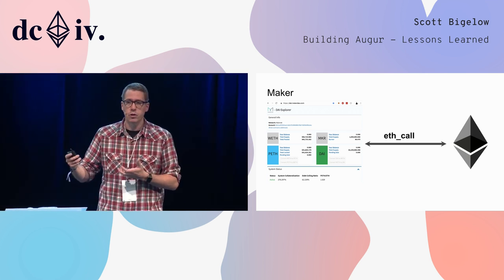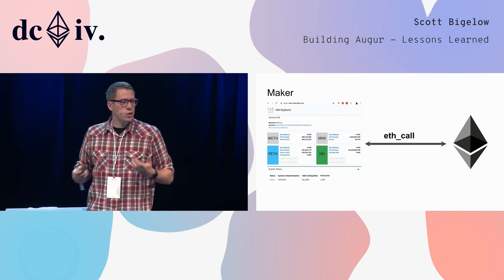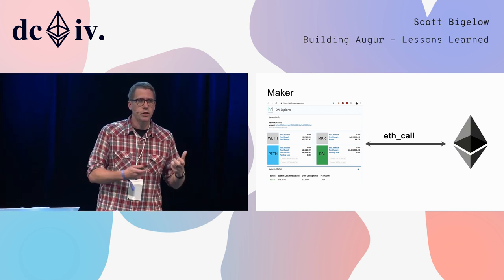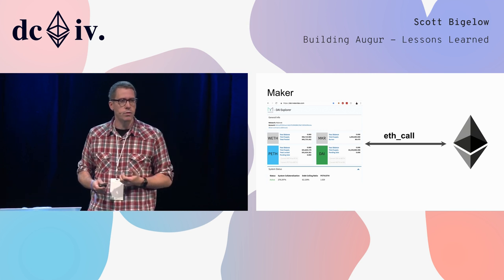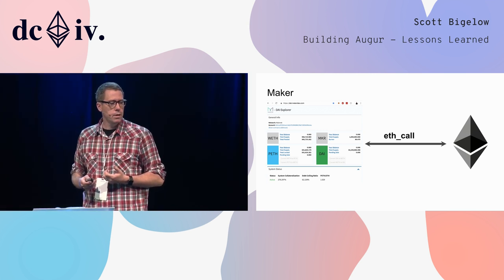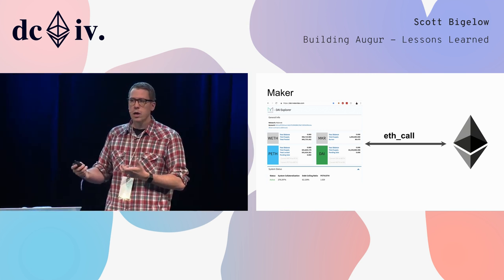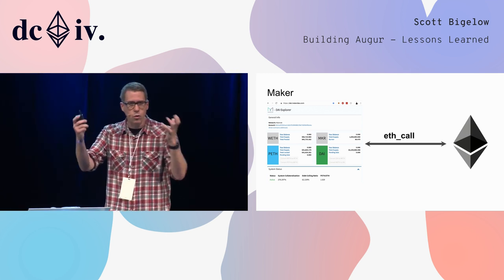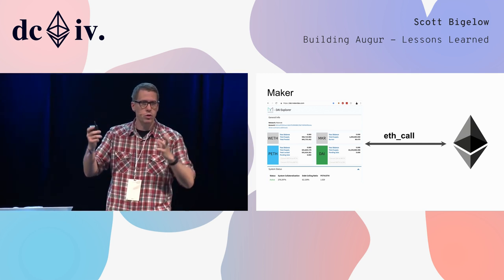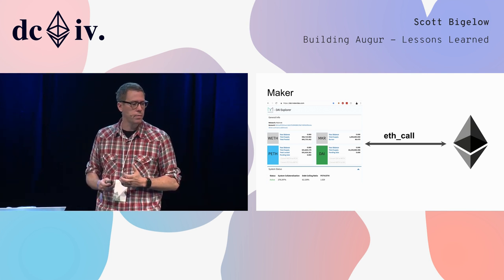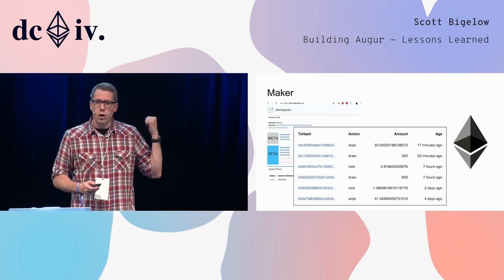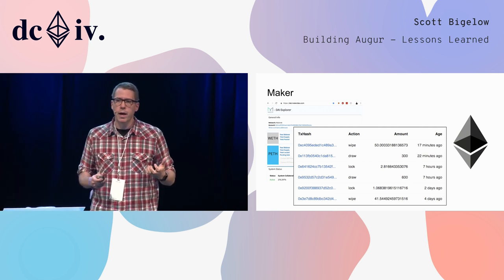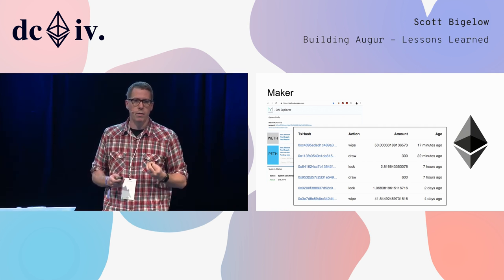An ETH call is a simple read call to ask questions. It might ask things like: how much MKR does this account have, how much DAI does this account have? These questions come from the current state of the Ethereum network — all this data is stored in the storage of the contract space. There's a little bit of logs that can tell you some things that happened in history, but mostly it is powered by asking questions about right now.